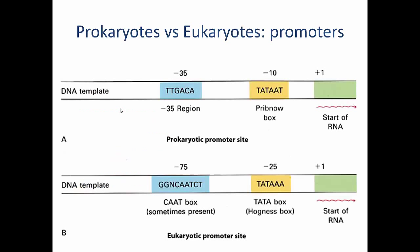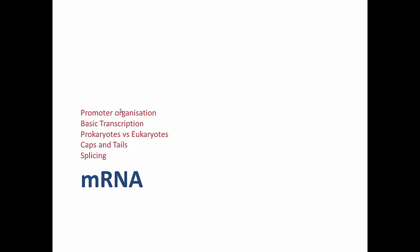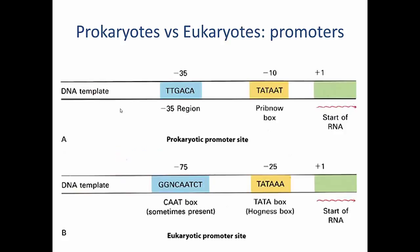Now I'd like to cover the structure and function of mRNA, including promoter organisation, basic transcription, the differences between prokaryotes and eukaryotes, how mRNA is capped and tailed, and splicing. Looking at promoter regions first: prokaryotes and eukaryotes have broadly similar promoter structure, however the distances involved differ.